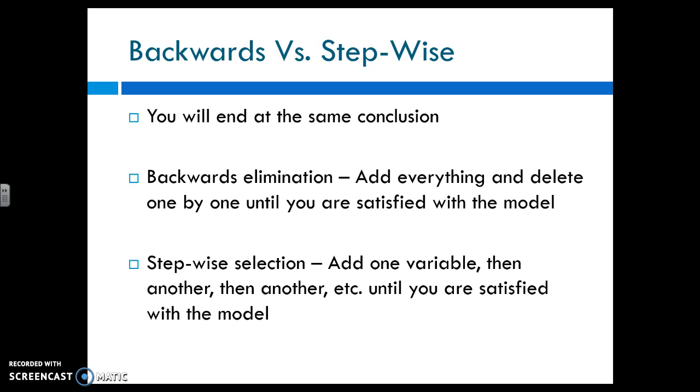So multiple regression is a problem solving model. So you can do this a couple different ways. You can throw in all of your variables and go backwards and delete, delete, and delete, and delete until you have your final model. This is the way I tend to go about it. You can also do stepwise. So you add one variable, see what happens, add another variable, see what happens, add another variable, see what happens, until you're satisfied. If you do it right, you'll get the same answer. I prefer to throw everything in and see what happens.